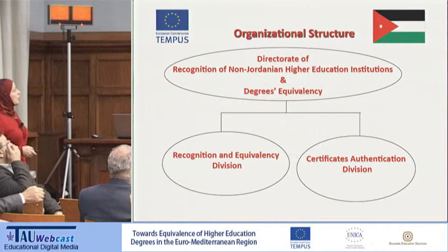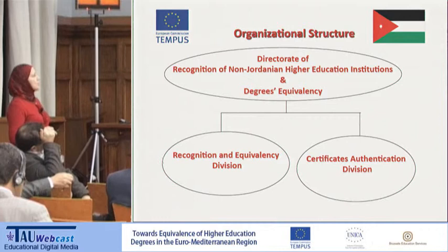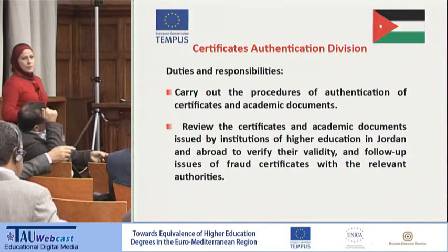Now, implementing the regulations. We have an organizational structure: the Directorate of Recognition of Non-Jordanian Higher Education Institutions and Degrees Equivalency. We have two sections or divisions: the Recognition and Equivalency Division, and the Certificates Authentication Division.